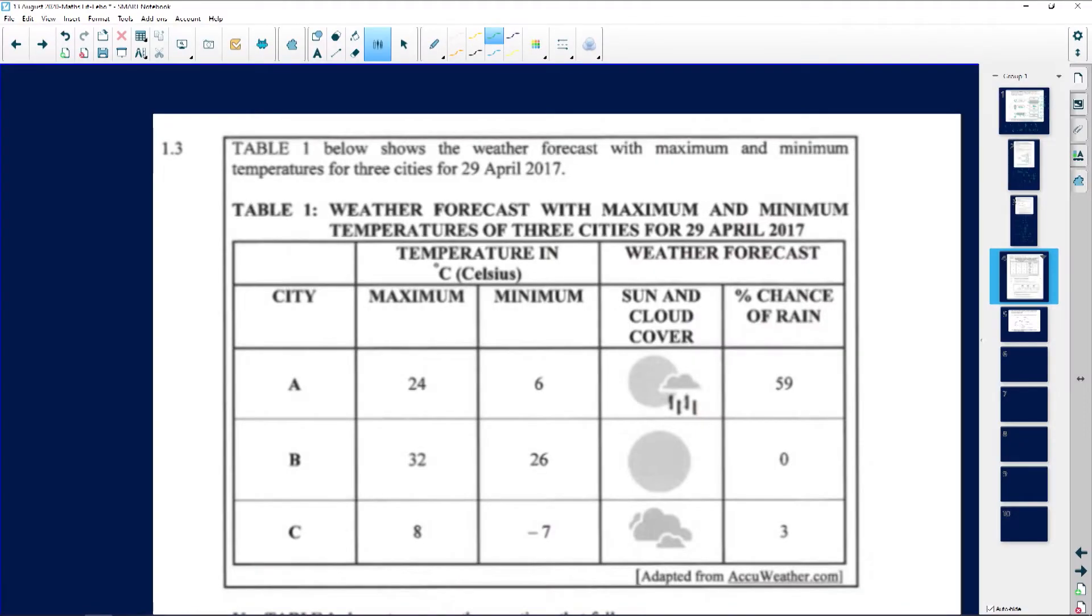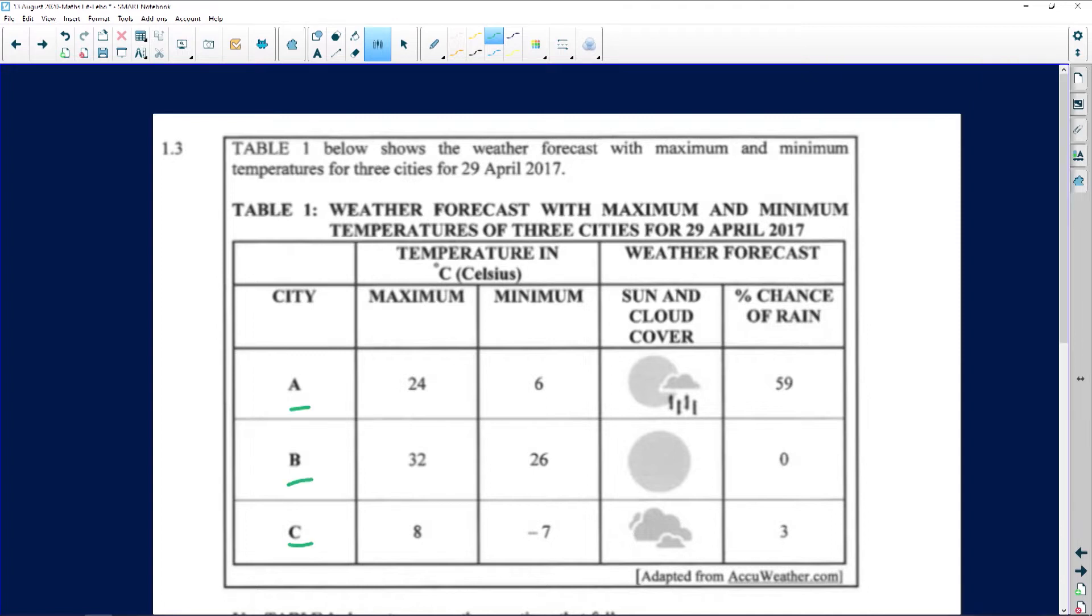Let's read the next one that we are given. The next one says to us here below shows the weather forecast with the maximum and the minimum temperatures for three cities. If we look at the cities here it says for the 29th of April 2017 weather forecast with maximum minimum temperatures. So as mentioned above, the cities do not have names, we've got City A, B, and C.